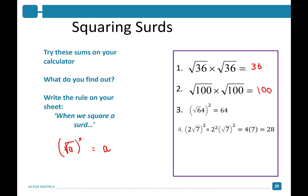Let's say we have 2 root 7 squared. In this case we have to use our index rules. AB to the power of Q is the same as A to the power of Q times B to the power of Q. So 2 root 7 squared is equal to 2 squared times root 7 squared. This simplifies: 2 times 2 gives you 4 times 7, which leaves us with a final value of 28.